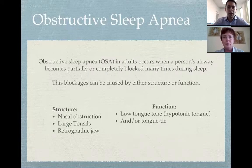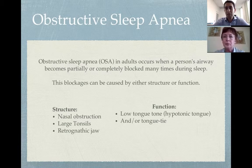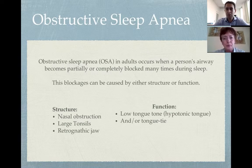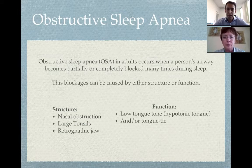As you know, obstructive sleep apnea is a process in which patients have a partial or complete blockage of their airway. These blockages can be caused either by structure or by function. By structure, we have things like nasal obstruction due to septal deviations or turbinate hypertrophy, blockages in the oropharynx at the level of the tonsils, or even problems with the maxillofacial skeleton as with retrognathic or micrognathic jaw.